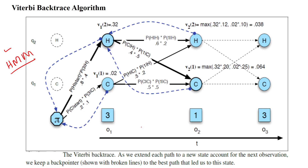In a Markov chain, the next state depends only on the current state. When moving from the current state to the next state, there are state transition probabilities. Those state transition probabilities can be used to represent the movement, and those movements can be easily calculated using the trellis diagram.